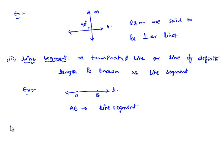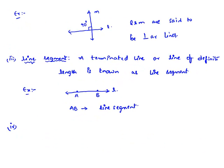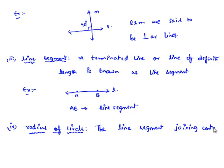Now moving on to the fourth part: the definition of radius of a circle. The radius of a circle is the line segment joining the center to any point on the circle.